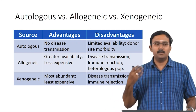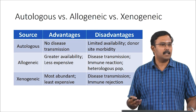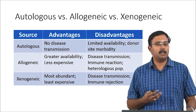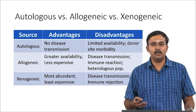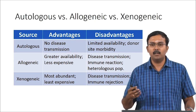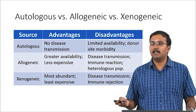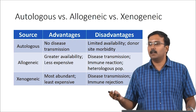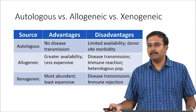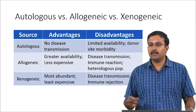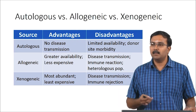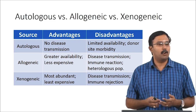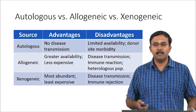People do try to use autologous cells as much as possible. In many cases what people do is harvest autologous cells, culture them, and expand them to get the desired numbers, then use them for treatment of the injured site. In the introduction lectures we talked about using autologous chondrocytes for regeneration of cartilage — those kinds of approaches are very commonly done even today.